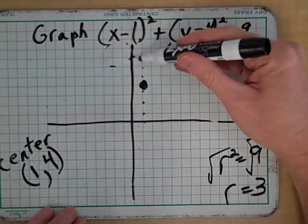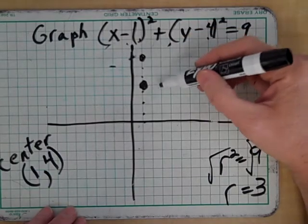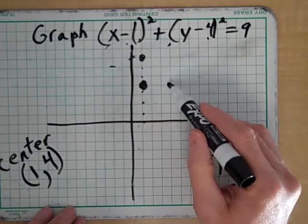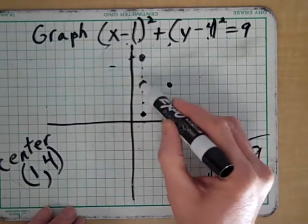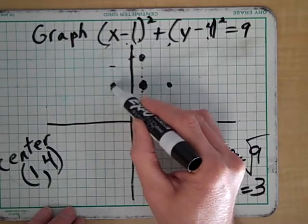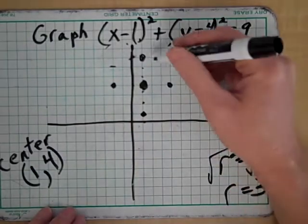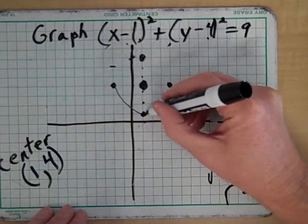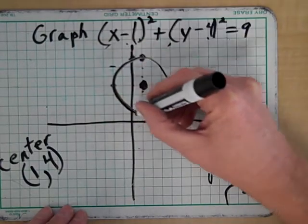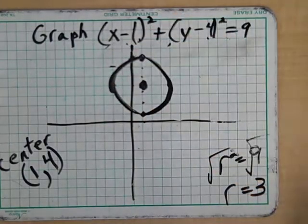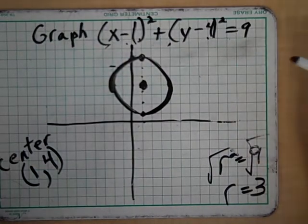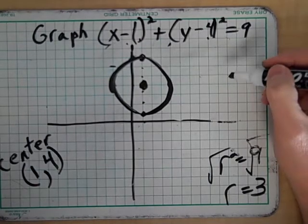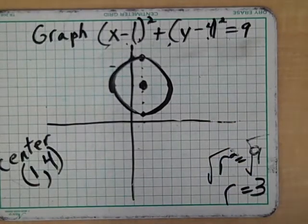[Counting grid units] I'm going to go three units above, to the right, below, and to the left. One, two, three. I'm going to try to draw a circle that doesn't look like a diamond. It's rougher to do for me when I have to hit specific points. That's adequate. But there's how you would graph that circle.